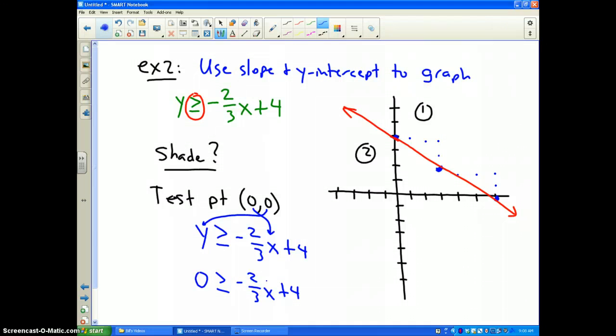And, I'm going to put zero where x is. Well, negative 2/3 times zero, that wipes out. So, all I have left is the question: zero greater than or equal to four. Well, we all know that that is not true. That is false.